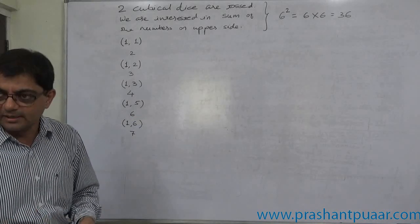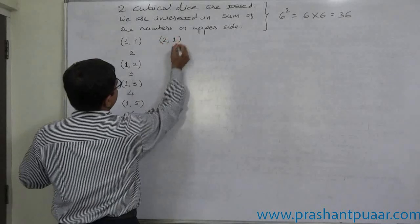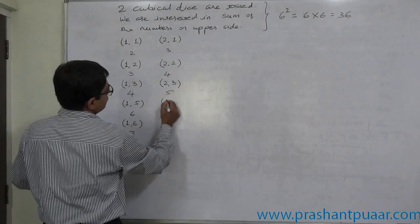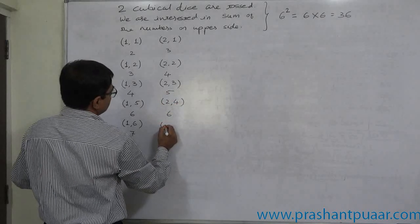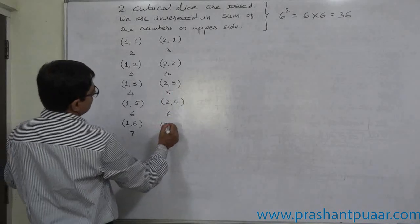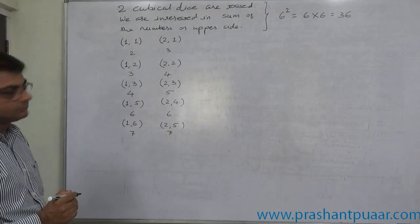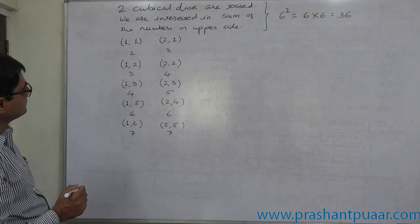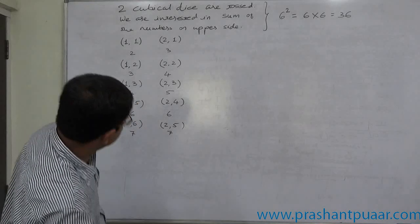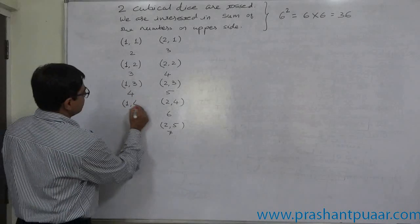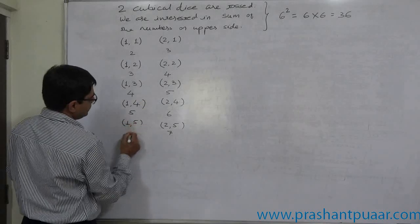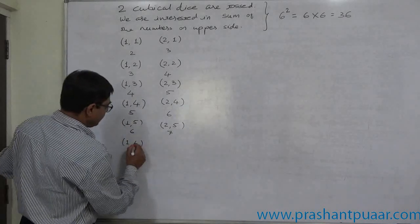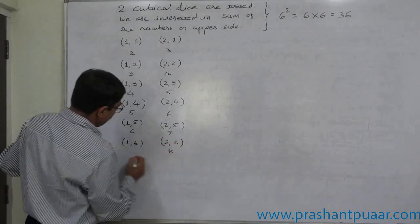Now, on the first die, say, two is there. The results will be two, one, summation three. Two, two, summation four. Two, three, summation five. Two, four, summation six. Two, five, summation seven. Two, six. So total is now eight. Mark that. Total increases by one.